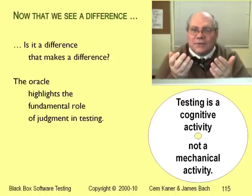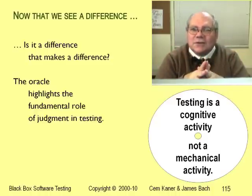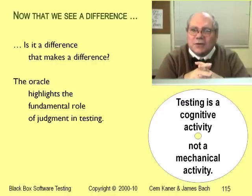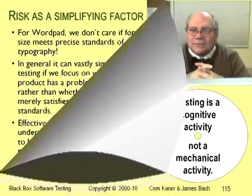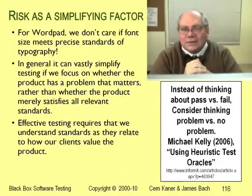Should we care about these differences? There's no mechanical system that can answer that for you. You have to make your own judgment — human judgment. It's fallible, but it's what we've got. To evaluate a test result, it's useful to think about risk or consequence.